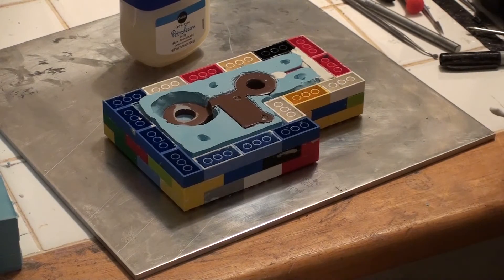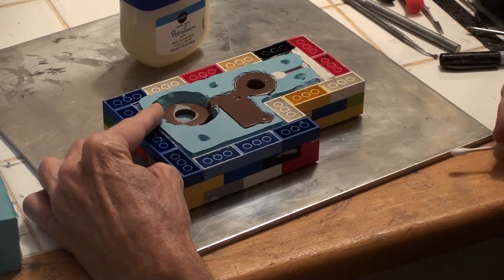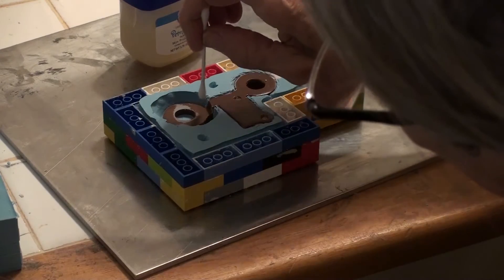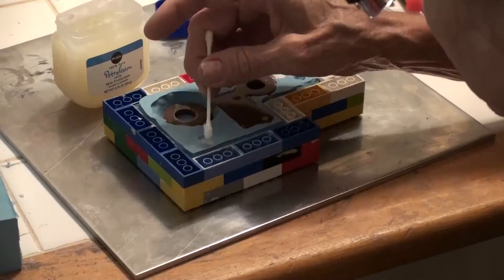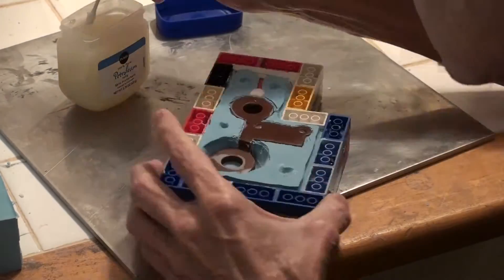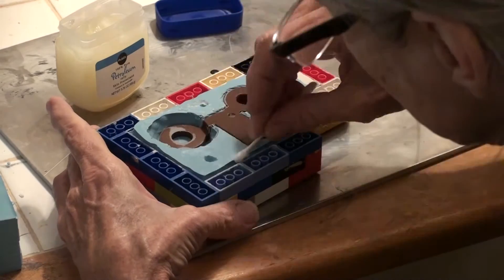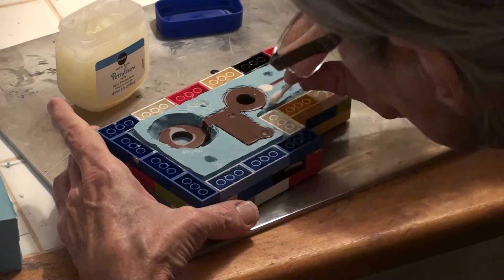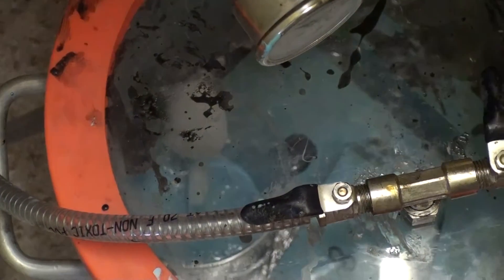Here you can see the first half of the mold has been cast. And the hollow by the doughnut right there was created by the modeling clay. Once again I'm using petroleum jelly to put a release layer between the bottom mold and the top mold that I'm about to cast.